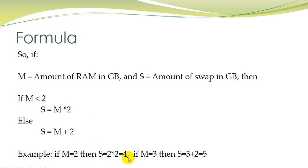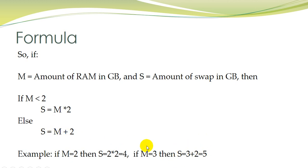For example, if M equals 2 then S equals 2 times 2, that is 4 GB. So if we have 2 GB of physical RAM, then swap should be 4 GB. And if physical RAM is 3 GB, then S equals 3 plus 2 — the else part applies since RAM is greater than 2 GB — so S will be 5 GB. If RAM is 3 GB, swap should be 5 GB.